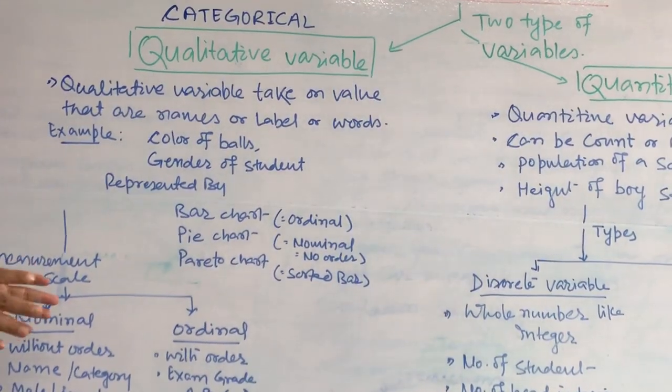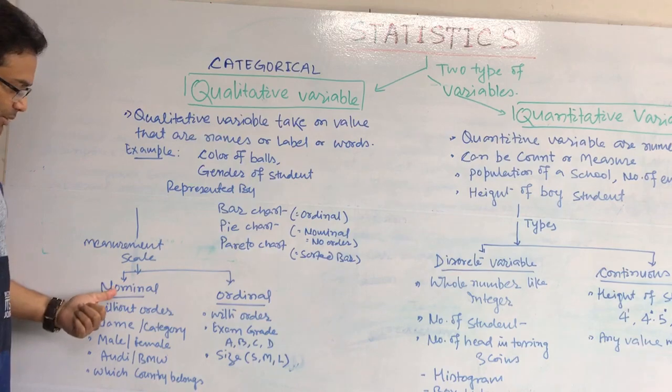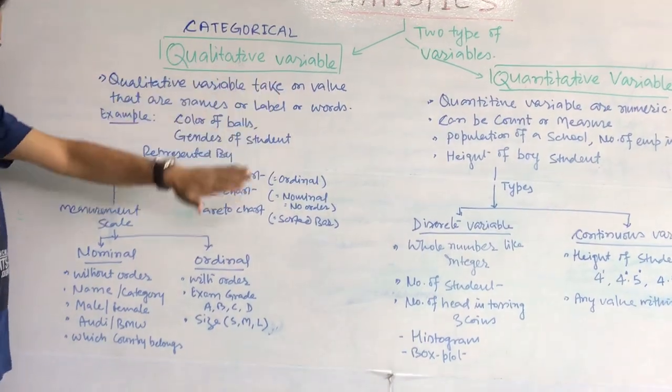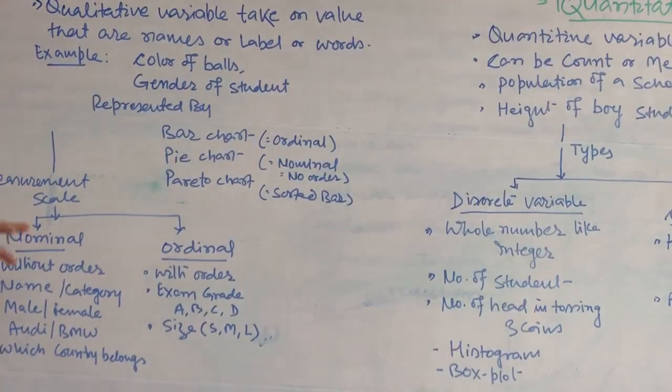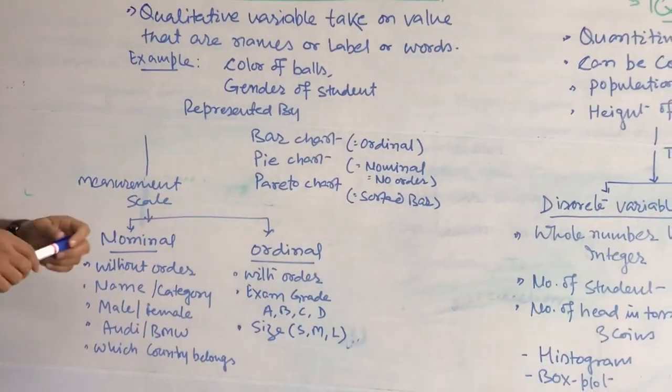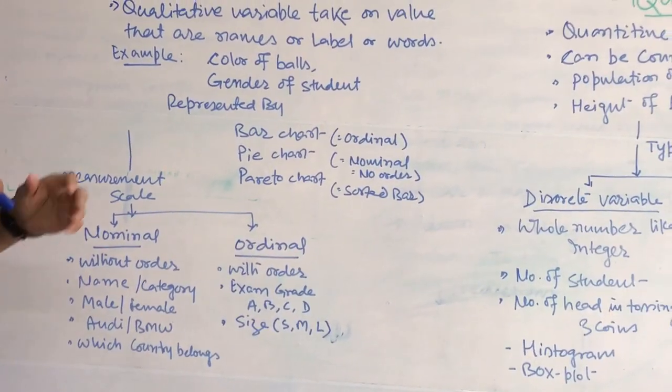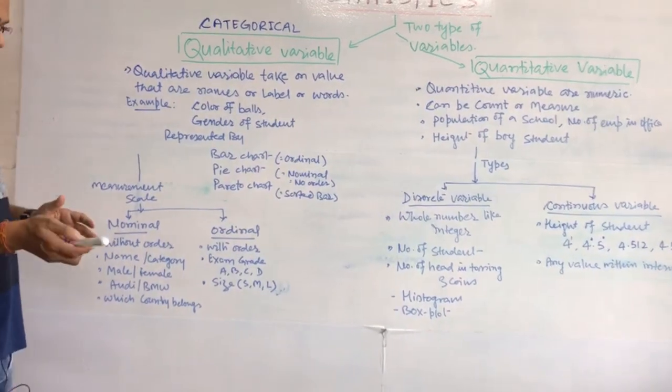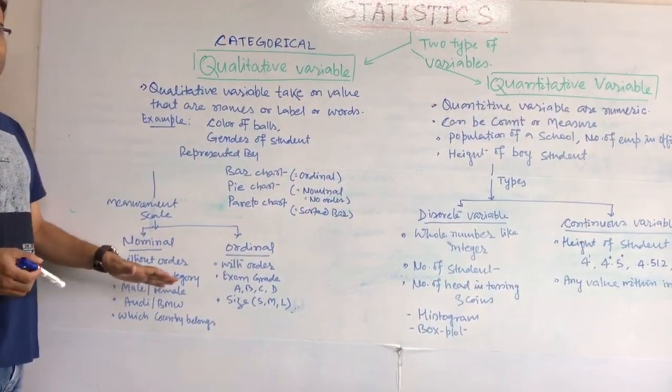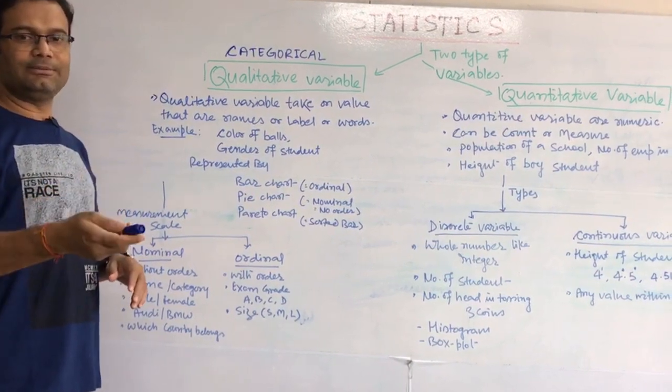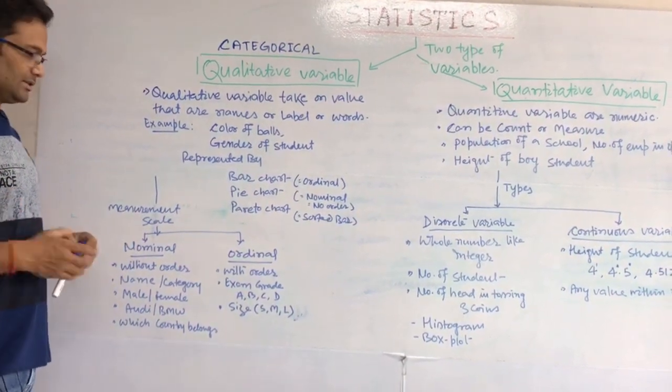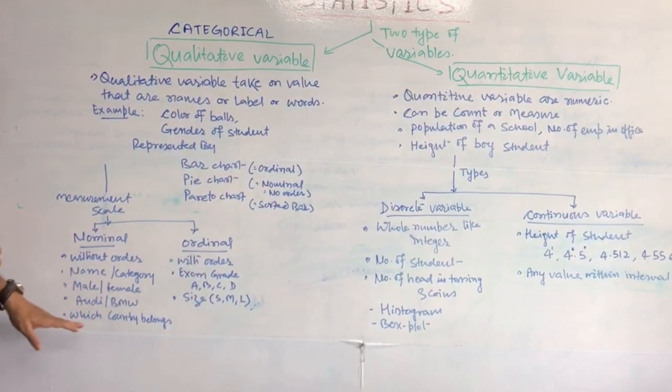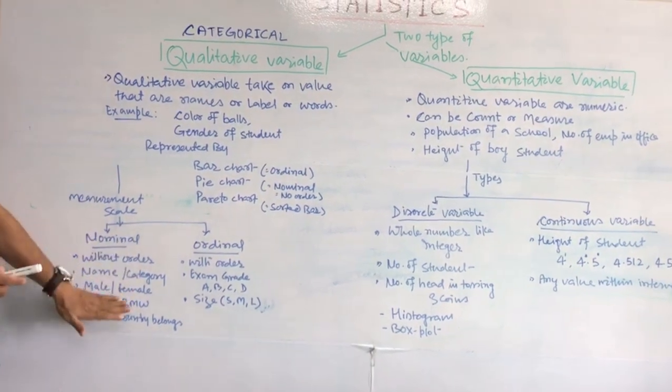Further, in qualitative, we can categorize into two parts. One is nominal, second is ordinal. Both are part of categorical data, qualitative data. What is the difference? Nominal data, where order does not matter. When I say names of five students, whether I say alphabetically A, B, C, D or random A, B, C, D alphabetical, there is no difference. When you say male, female, whether first I call out male, then second female or the opposite, no difference. Because this is categorical data and nominal data. When you talk about cars or which country you belong to, this kind of nominal data.